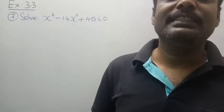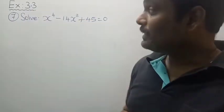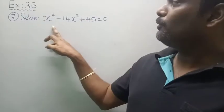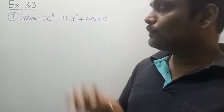Hi my dear student, today we will discuss Chapter 3 Theory of Equations, Exercise 3.3, Question Number 7. Solve x⁴ - 14x² + 45 = 0. In this case, the degree is 4.